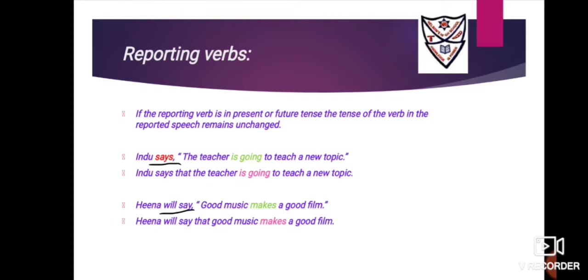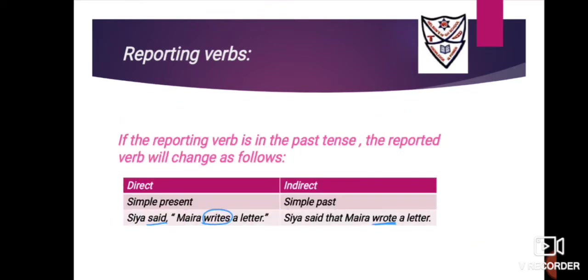Example two: 'Hina will say, good music makes a good film.' First step: underline the reporting verb 'will say,' and circle the reported verb 'makes.' Because the reporting verb is in future tense, the reported verb will not change. Remove the inverted commas, replace the comma with the conjunction 'that,' and make the capital G lowercase. Answer: 'Hina will say that good music makes a good film.' The verbs remain unchanged because the reporting verb is in present or future tense.